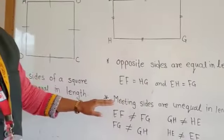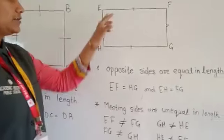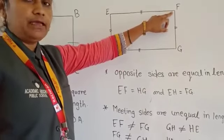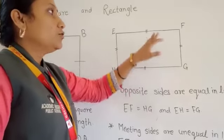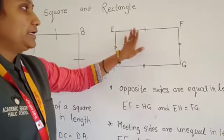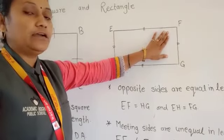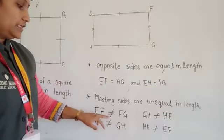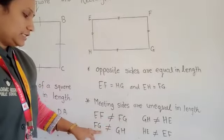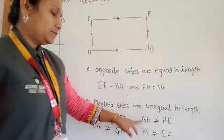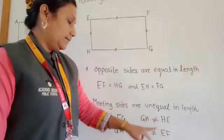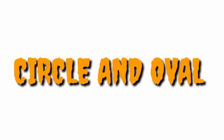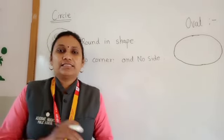Now, meeting sides. In the last video, we learned about the meeting sides. Meeting sides are which sides meet at one point. In a rectangle, meeting sides are unequal. EF is not equal to FG, and the length of GH is not equal to the length of EH. This is about our square and rectangle.